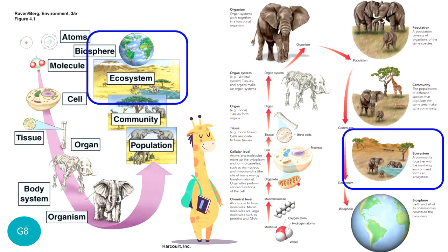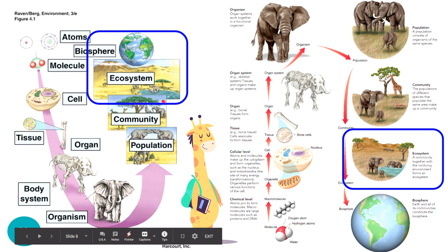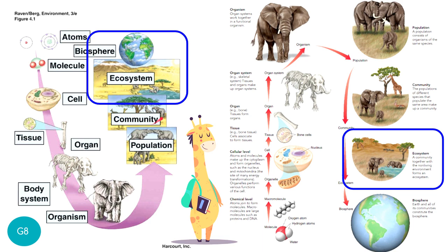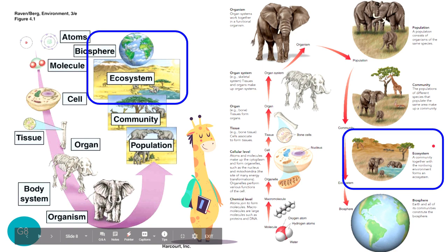If you still remember our lesson on levels of organization, ecosystem is one of the larger levels of organization. It's made up of community — those are groups of organisms from different species — interacting with their physical environment, including the living things and their non-living factors in their area. If you put all the ecosystems in the world together, you form the biosphere — that region of the earth capable of sustaining life.